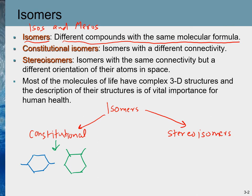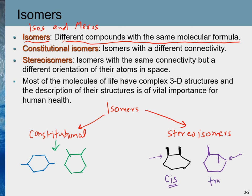In the case of stereoisomers, both the connectivity and the molecular formula are the same, but the three-dimensional orientation is different. These two are examples of stereoisomers — in one case both methyl groups are above the ring, and in the other one is above and one is below. We learned in the previous chapter that these are called cis isomers and trans isomers.